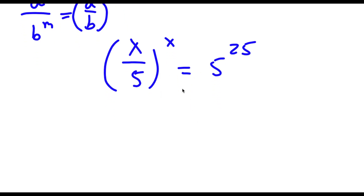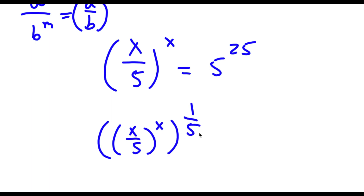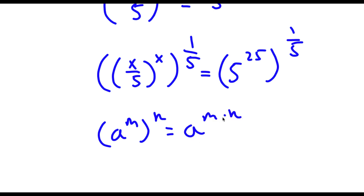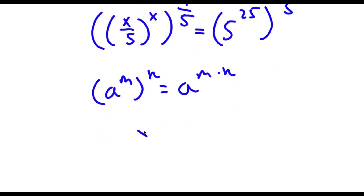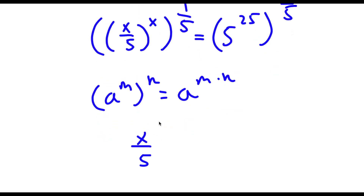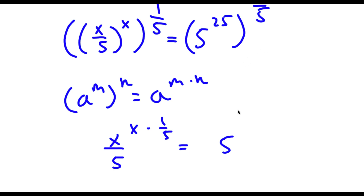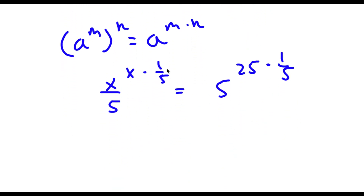I'm going to take the power of 1 over x on both sides — sorry, 1 over 5 on both sides. So (x over 5) to the power of x, to the power of 1 over 5, equals 5 to the power of 25, to the power of 1 over 5. Using the rule a to the power of m to the power of n equals a to the power of m times n, that gives (x over 5) to the power of x over 5 equals 5 to the power of 25 times 1 over 5. x times 1 over 5 is x over 5, and 25 times 1 over 5 is 5.